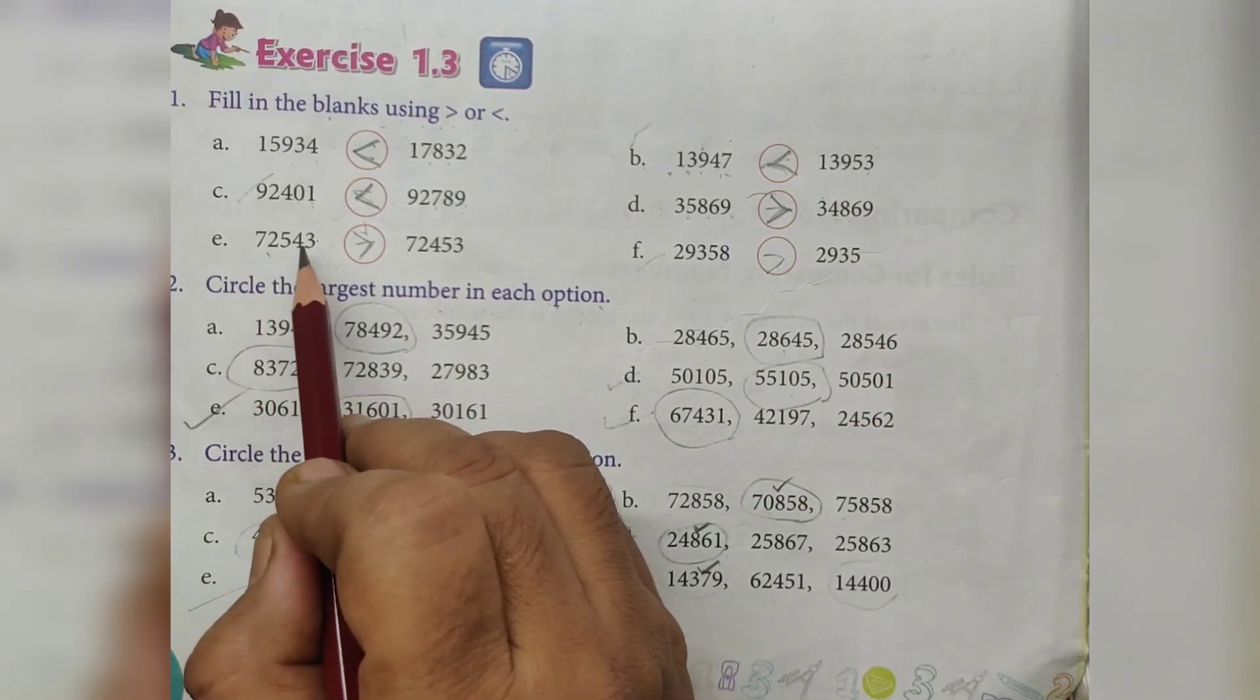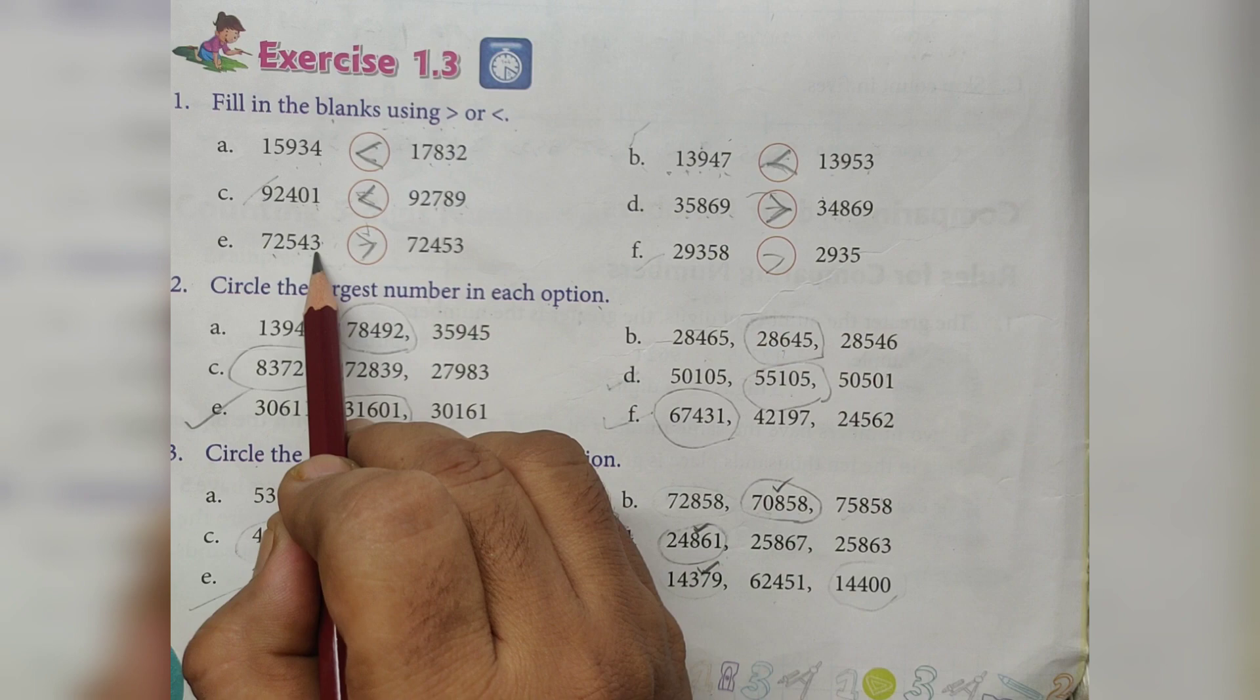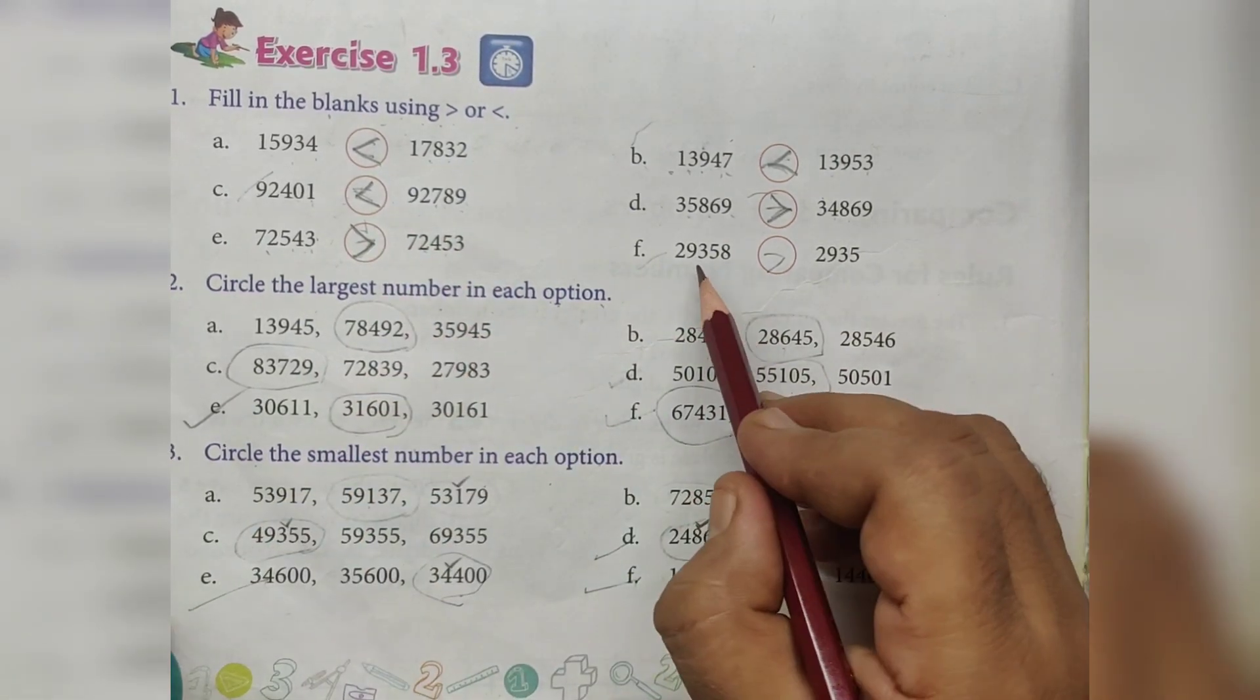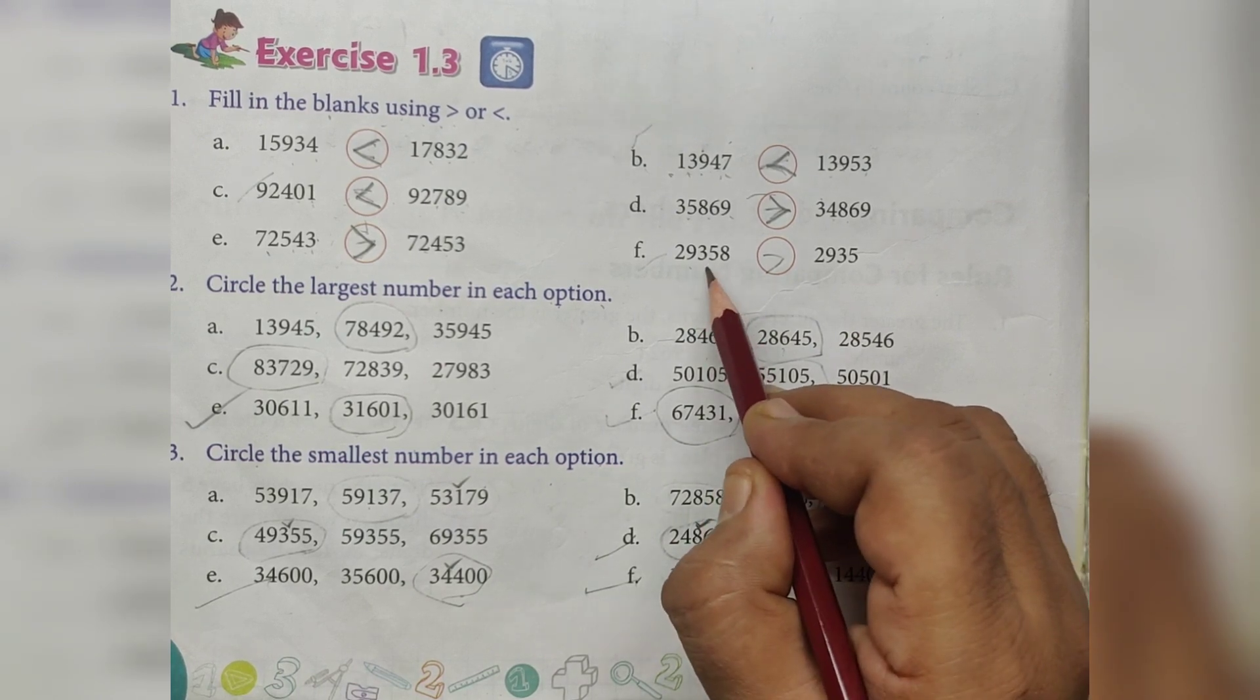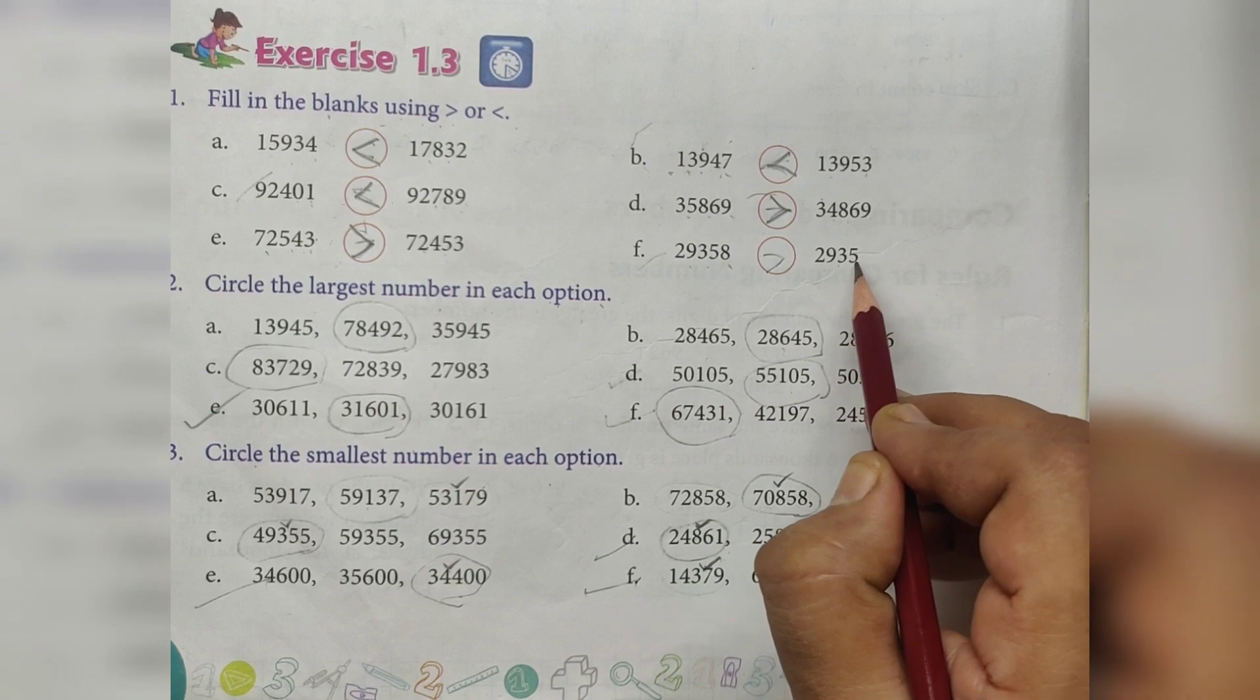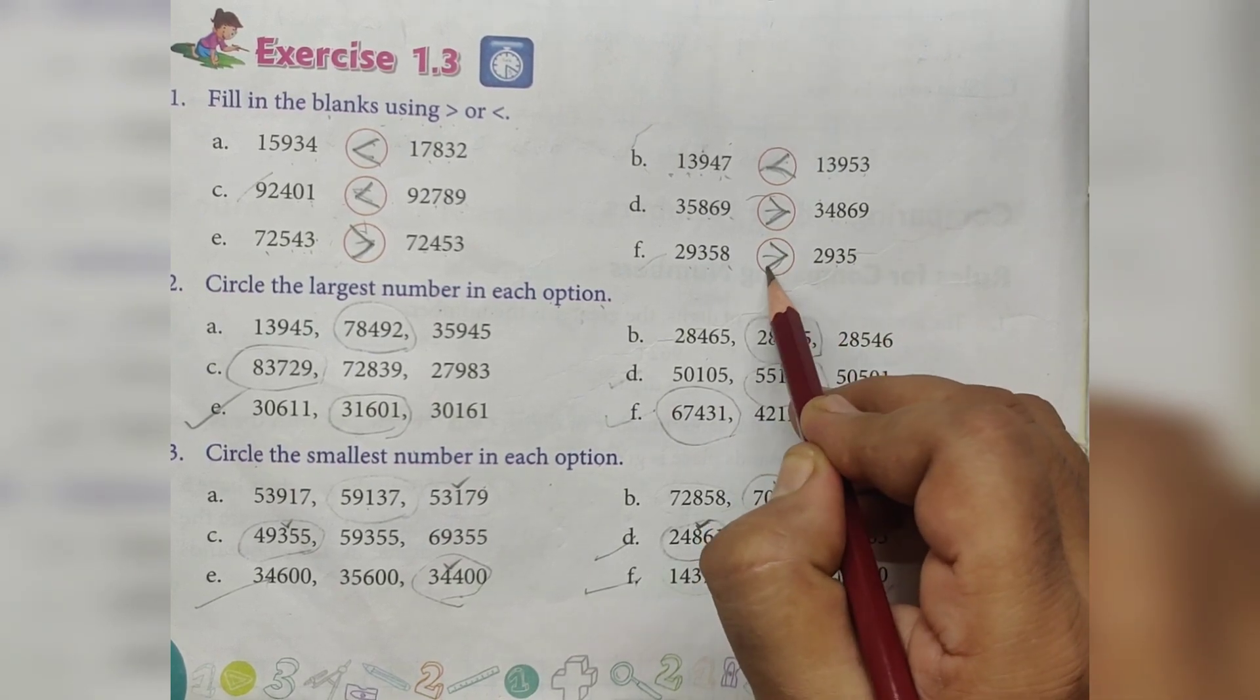72,543, 72,453, this is greater. 29,358, 2,935, this is greater.